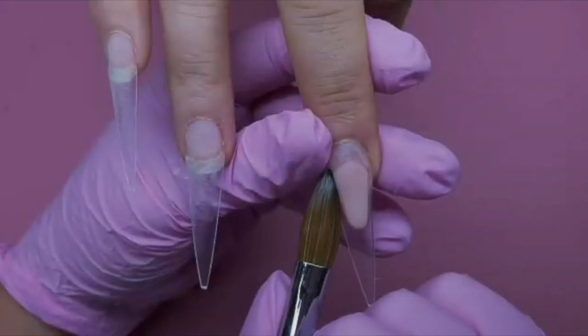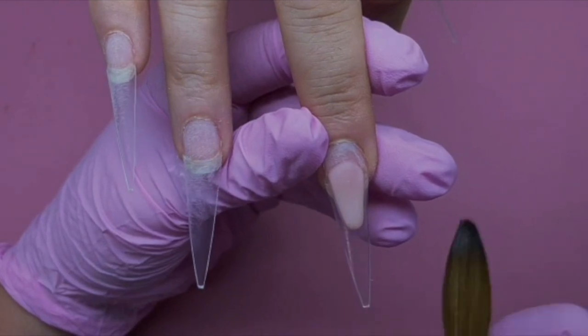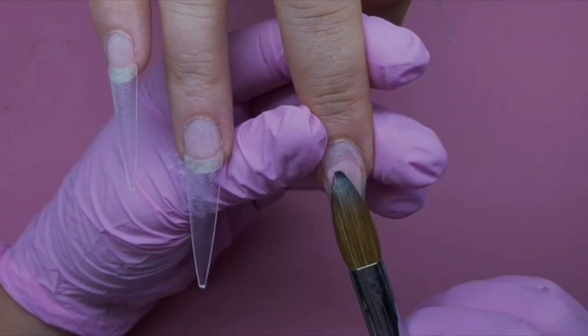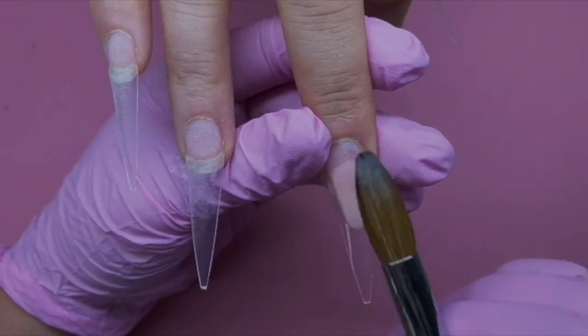Key to this is keeping your brush nice and wet and clean so the acrylic doesn't stick to your brush as you're trying to mold it into the shape you want. Using the belly of my brush there just to pat it down.